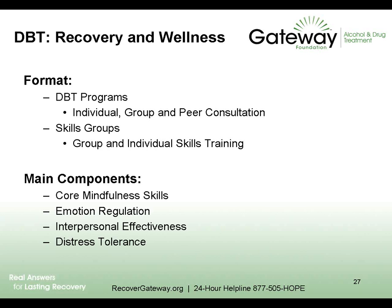Interpersonal effectiveness teaches strategies for asking for what one needs, saying no, and coping with interpersonal conflicts — essentially social skills training. This includes obtaining changes you want, maintaining the relationship while doing it, and maintaining self-respect. These are effective groups especially with co-occurring disorders, teaching refusal skills and helping people stand up for themselves. Many people come into treatment feeling disempowered — with family members who are hurt and treat them with disrespect — so these groups can be very powerful.